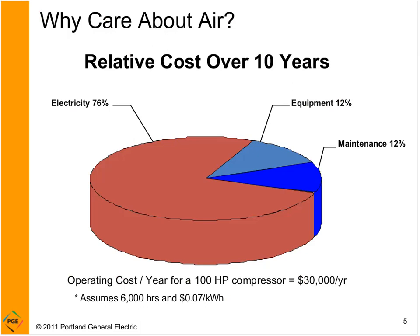If we look at the life cycle of a compressed air system over ten years, approximately 12% of that cost goes to purchasing equipment, and maintenance is another 12%. The most important piece: 76% of compressed air expenditures go to electricity. So whether you nickel-and-dime your equipment, what really makes a big impact is electricity use. Keep that in mind when purchasing equipment — it may be worth buying the energy efficiency option.